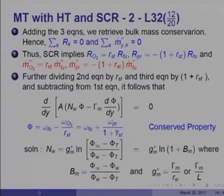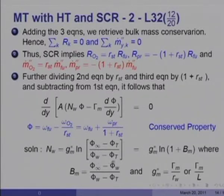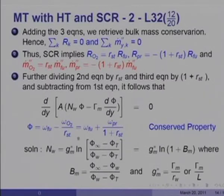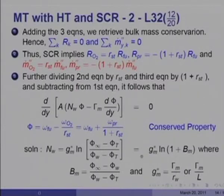The solution again has the same logarithmic form: N_w = G*_m · ln[(φ_∞ − φ_t)/(φ_w − φ_t)] = G*_m · ln(1 + B_m), where B_m = (φ_∞ − φ_w)/(φ_w − φ_t). Even in a combustion problem, we reduce the mathematics to the same form as simple water evaporation. G*_m = γ_m/r_w for spherical or γ_m/L for planar systems.